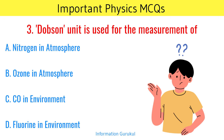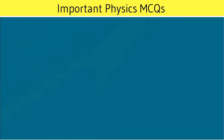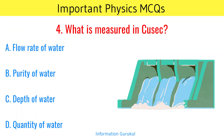Dobson unit is used for the measurement of? Ozone in atmosphere. What is measured in QSEC? Flow rate of water.